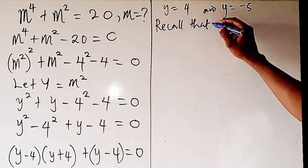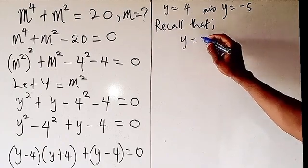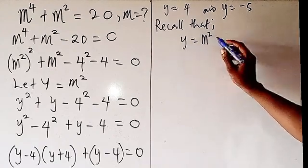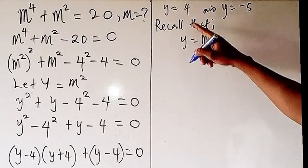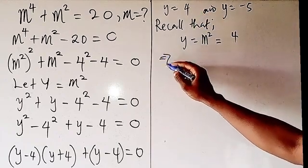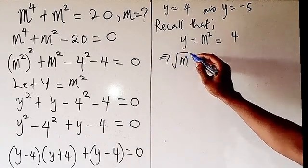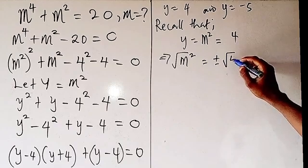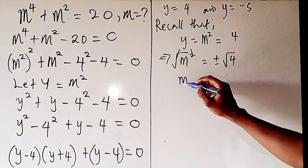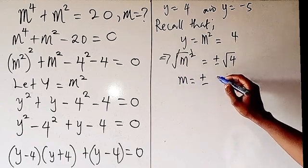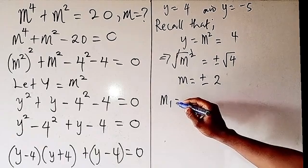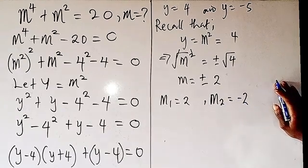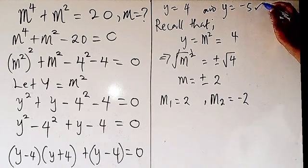Recall that y equals m squared. So when y equals 4, this implies m squared equals 4. Taking the square root of both sides gives m equals plus or minus the square root of 4. So m₁ equals 2 and m₂ equals minus 2.